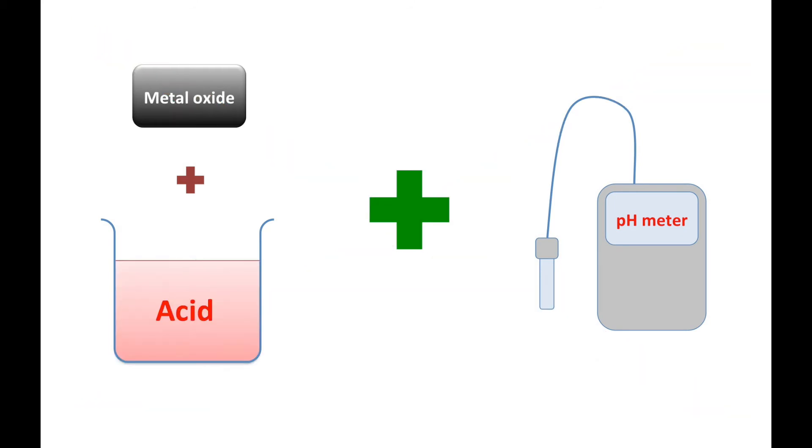The correct method should be to dissolve the metal oxide in acid, not water. Because if the pH meter shows an increase in the pH value of the acid, then we can conclude that the metal oxide shows basic properties.